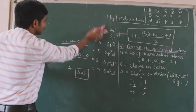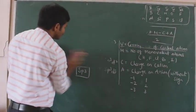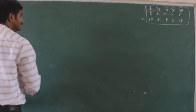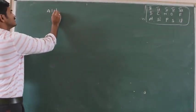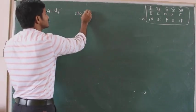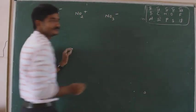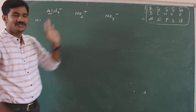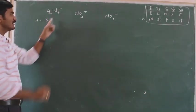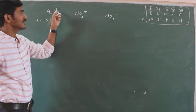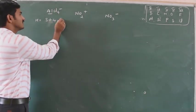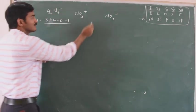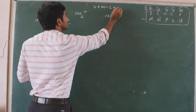Now let me show some more examples. Take AlCl4 minus. H equals: central atom is Aluminium, group number 3. Plus how many monovalent atoms? Four chlorines. Is there a cation charge? No — it is an anion. Cation charge is zero. Anion charge is 1 (the charge is minus 1, but we take it as 1). So (3 + 4 − 0 + 1) / 2 = 8 / 2 = 4. That means SP3 hybridization.